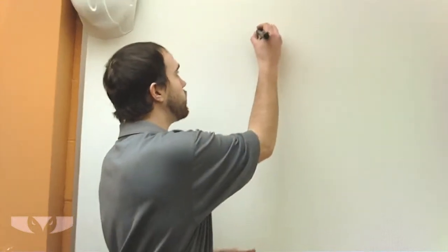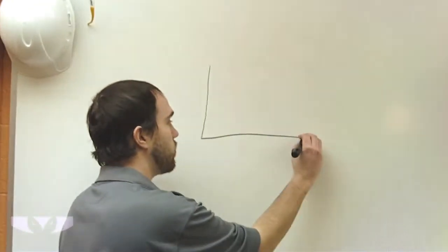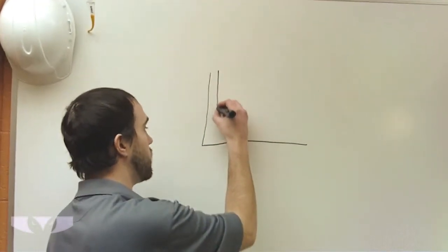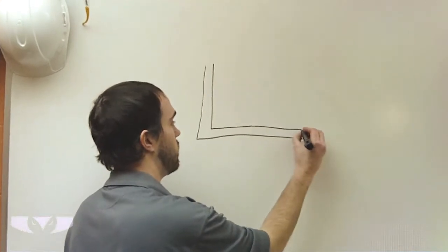Now, I get this all the time where someone sends in their drawing, they've made a part, it's obviously got bends in it, but when they draw it, so this would just be the bend portion, they draw it like this, okay?